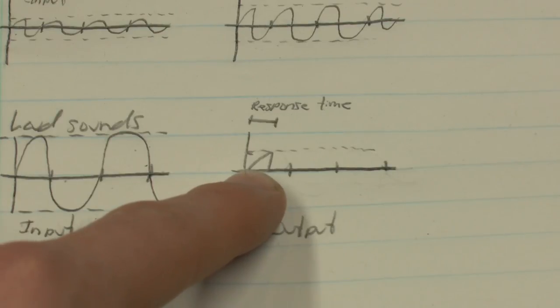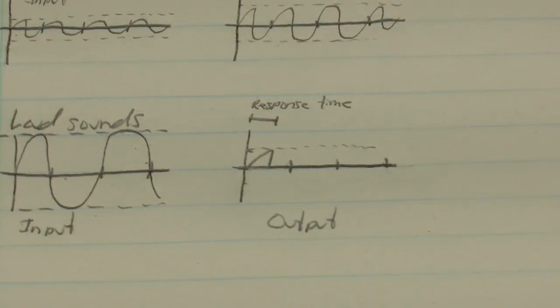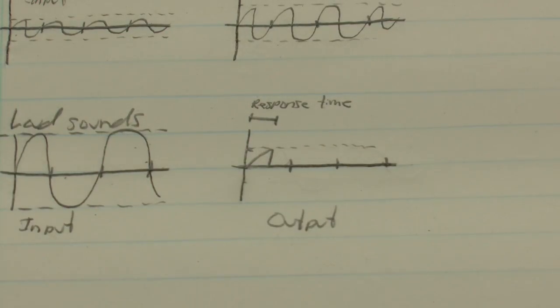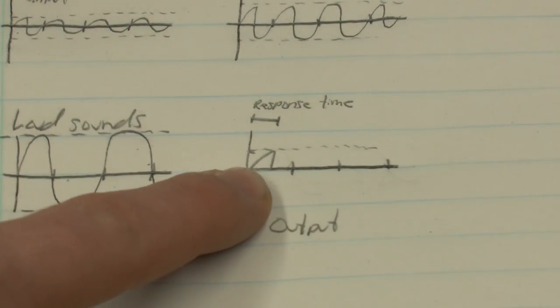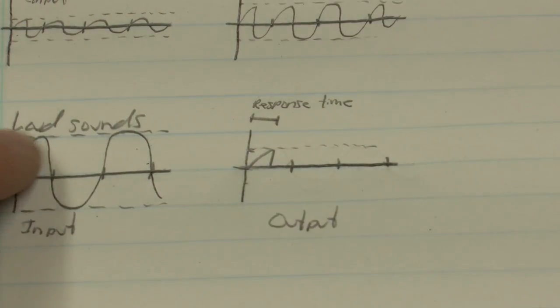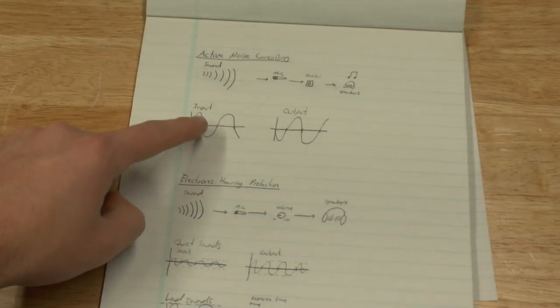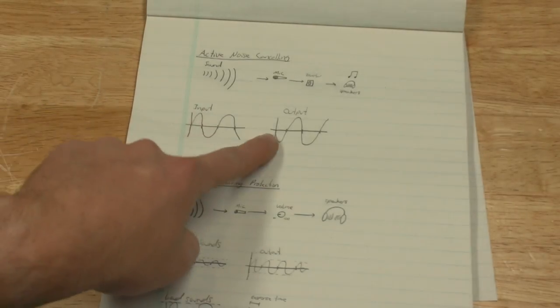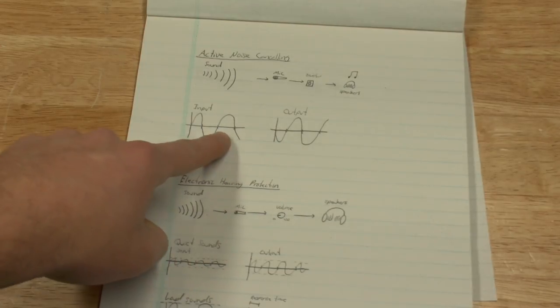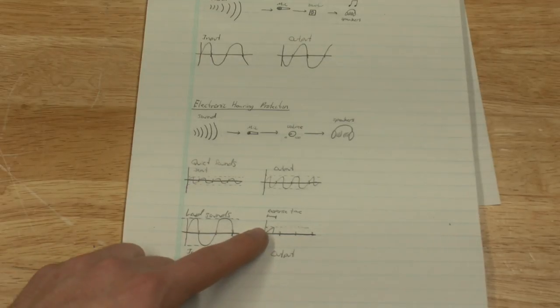Here's where the confusion comes in. People think that because the response time is 10 or 15 milliseconds, that they are being exposed to loud sounds during that amount of time. That is not true. If you look at the amplitude of this graph, you'll see it's very low. It's not as loud as the original sound. Again, if you'll notice, with the active noise cancelling, the amplitude of the output had to be the same as the amplitude of the input. Well, with electronic hearing protection, that's not the case.